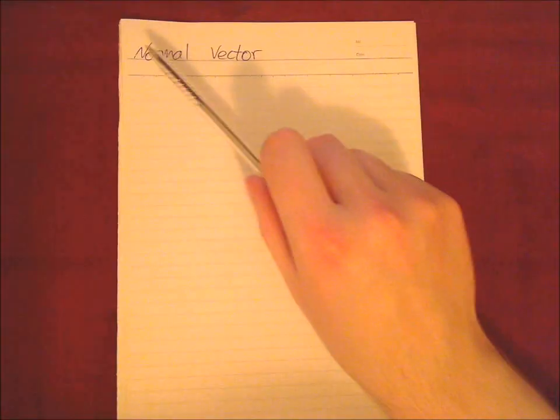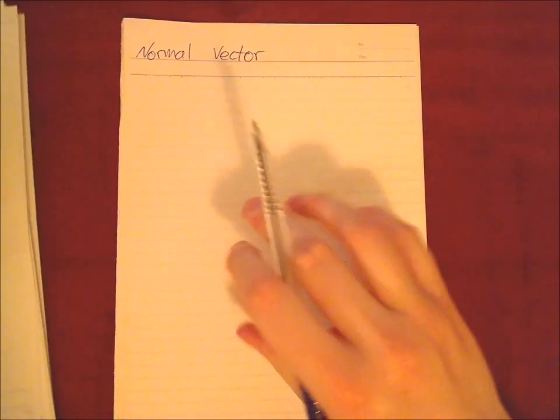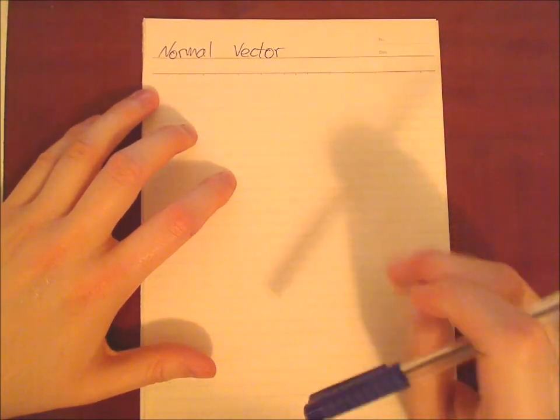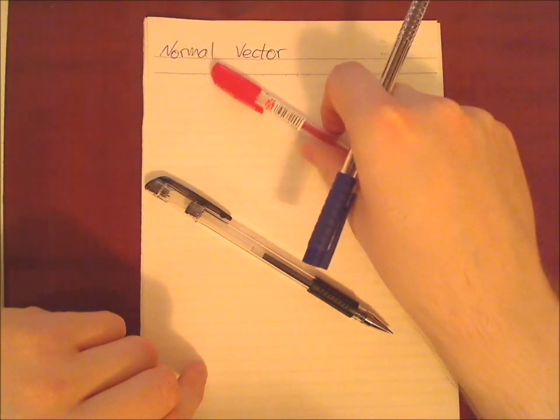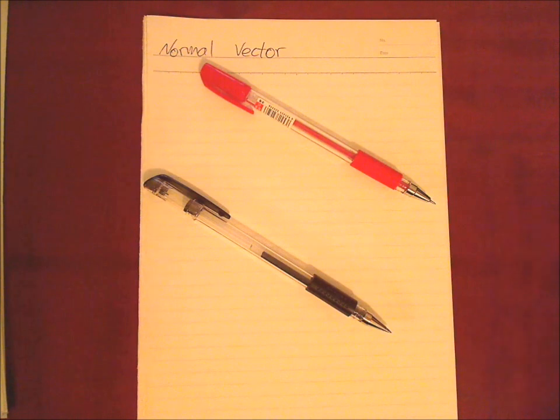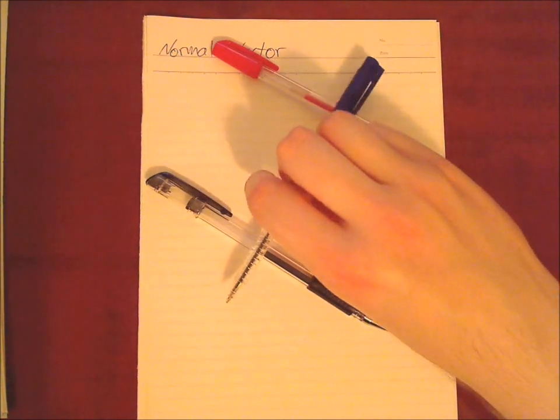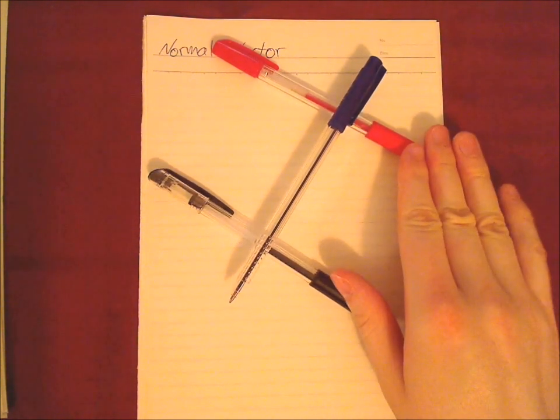How to calculate a normal vector? Actually there are two different ways how to do that and first we need two vectors so that we can calculate a normal vector. For example in the two dimensional area normal vector would be something like this, a vector which has an angle of 90 degrees to both the other vectors.